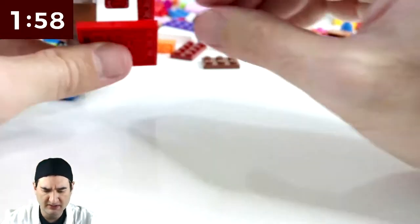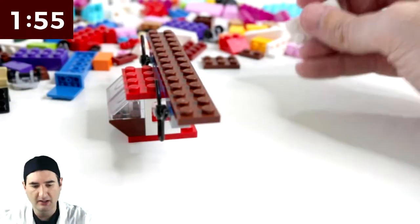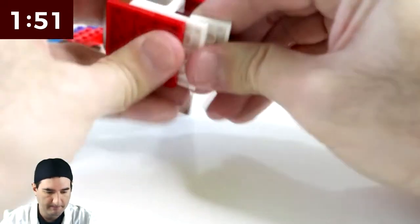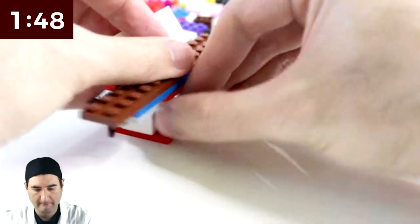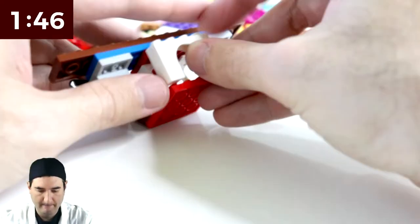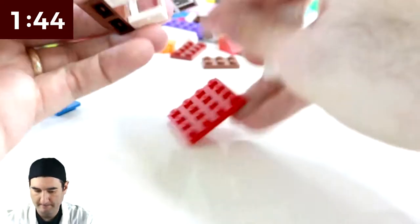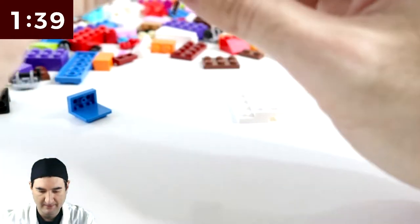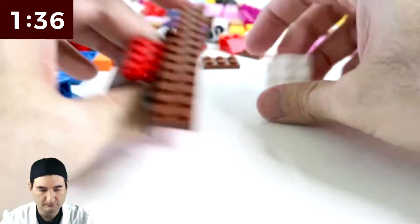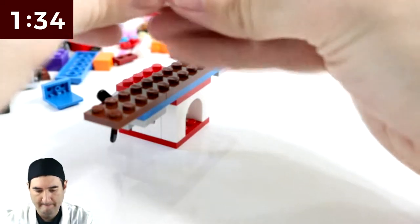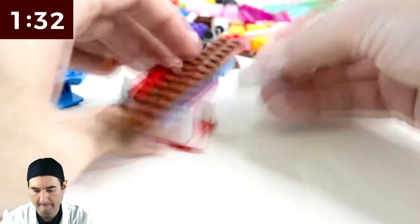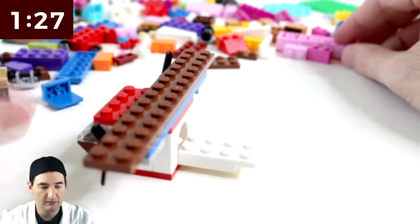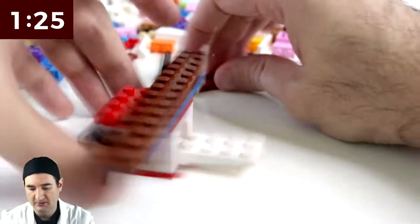So now we need to get really small on the back end. How are we going to do that? Let's see. Something maybe like this. Okay, we're going to use that. There we go. Something like that maybe. Starting to take shape.